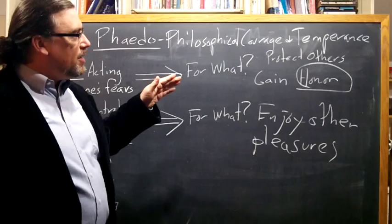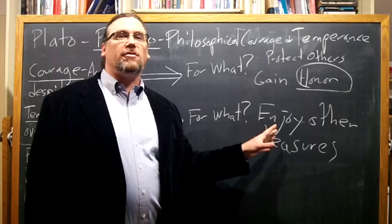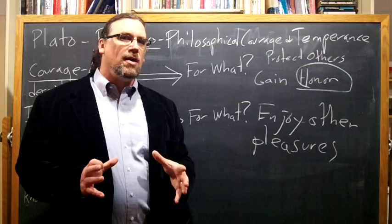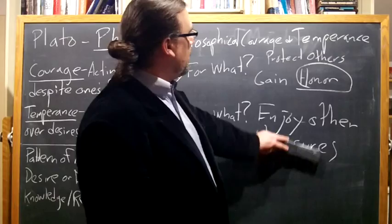So Socrates is saying that if you're giving up pleasures, if you're being moderate just so that you can enjoy other pleasures, similarly with courage, there's actually some intemperance. There's a lack of self-control to your self-control. It's not pure. It's mixed. It's being done for the sake of its opposite. Only the philosopher is truly temperate.